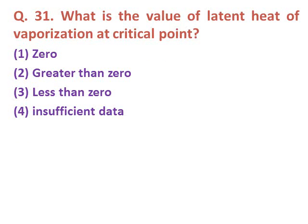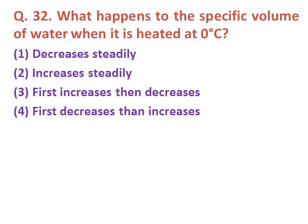Question thirty-one: What is the value of latent heat of vaporization at the critical point? Option one: zero. Option two: greater than zero. Option three: less than zero. Option four: insufficient data. The correct answer is option one — zero. At the critical point, there is no latent heat.